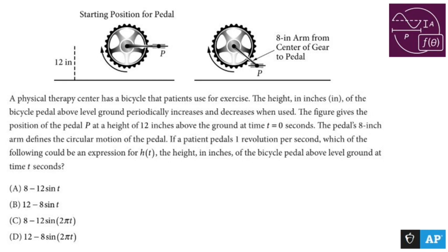A physical therapy center has a bicycle that patients use for exercise. The height in inches of the bicycle pedal above the level of ground periodically increases and decreases. The figure gives the position of the pedal P at a height of 12 inches above the ground at t equals zero.